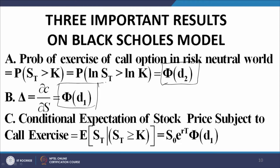The third result is that the conditional expectation of the stock price subject to call exercise equals S naught·e^(RT)·Φ(D1). This is the expected value of all stock price values greater than or equal to K — i.e., the expected stock price conditional on the option being exercised — and it equals S naught·e^(RT)·Φ(D1). These are three important results derivable from the Black-Scholes equation.